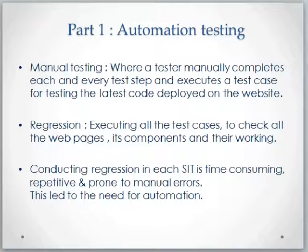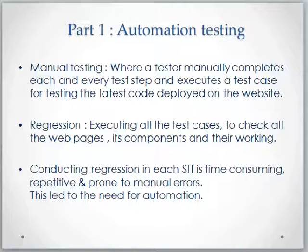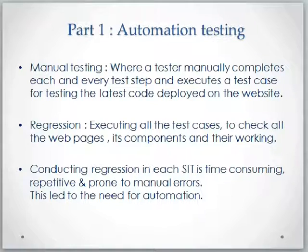You must be aware about regression testing — we do it in our SIT phases. In regression testing, a tester will execute all the previously executed test cases and check whether there are any implications of the new code on existing functionality. This process is very cumbersome, time-consuming, repetitive, and prone to errors. If you're in an agile model you cannot afford to lose this precious time in regression testing, since we just want to make sure there are no impacts on existing functionality. So this led to the need for automation.